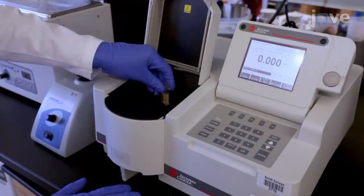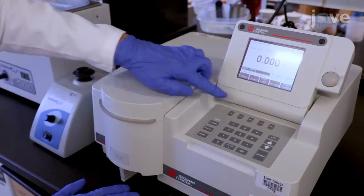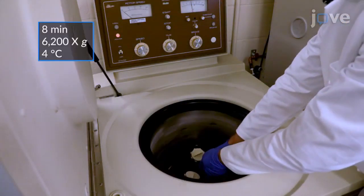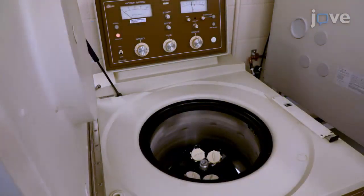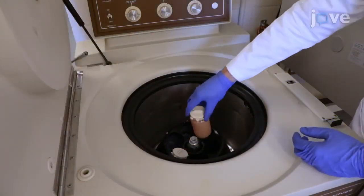On day four of culture when the optical density at 600 nanometers is between 1.5 and 2, collect the yeast cells by centrifugation and resuspend the pellet in water to wash them and consolidate the cells in a single bottle.